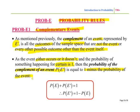So for example, the probability of getting a 6 on a die is 1 in 6. The probability of not getting it is 1 minus 1 in 6, which is 5 in 6. So you can see that expressed here: the probability of E plus the probability of the complement of E has to equal 1. So the probability of the complement of E has to be 1 minus the probability of E.